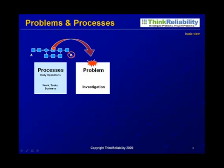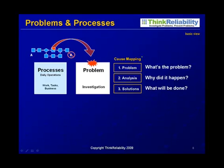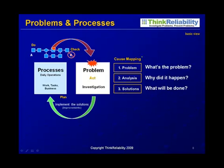In terms of how problems and processes relate, every problem is a signal that processes have broken down. Once you define the problem, conduct a cause and effect analysis, and come up with solutions, those solutions end up being improvements in your process — to prevent the problem from ever occurring. This is typically known as plan, do, check, act — the 'act' piece being the investigation. You can investigate something that did happen, and you can investigate something that could happen.